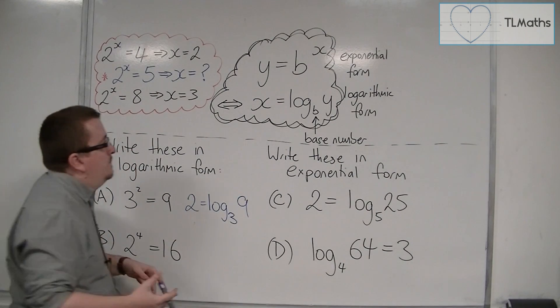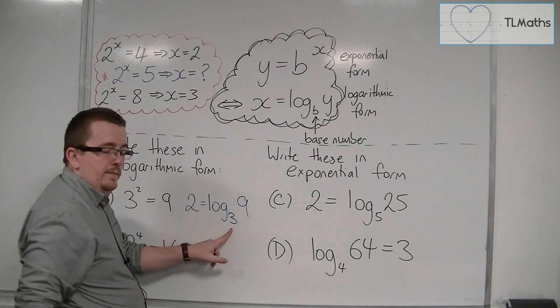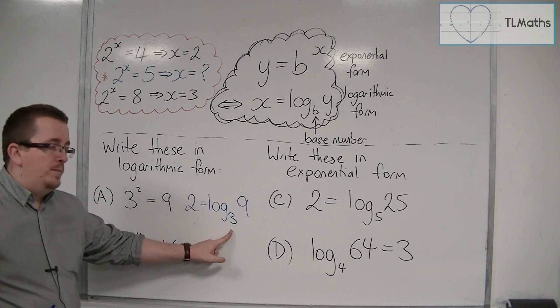Effectively, what it's saying is that 3 to the power of 2 is 9. That is how a logarithm like this should be read.